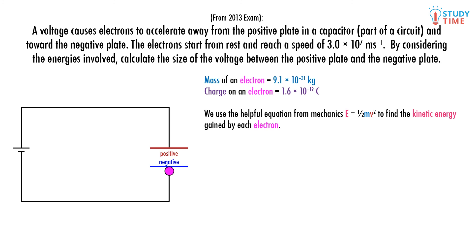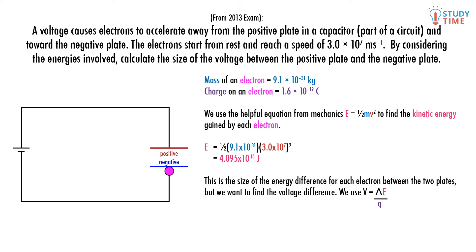We use the helpful equation from mechanics, E equals half mv squared, to find the kinetic energy gained by each electron. Substituting the values: E equals half of 9.1 times 10 to the negative 31, times 3 times 10 to the 7 squared, equals 4.095 times 10 to the negative 16 joules. This is the size of the energy difference for each electron between the two plates, but we want to find the voltage difference.